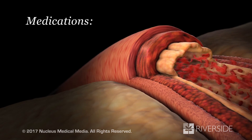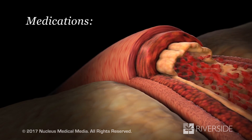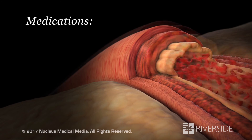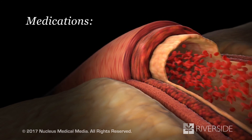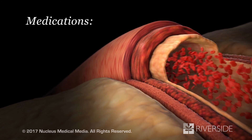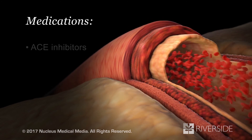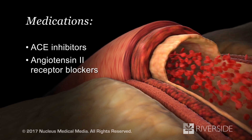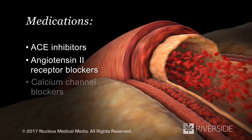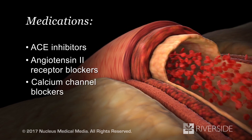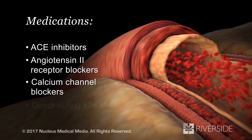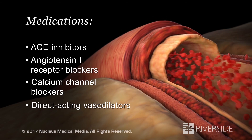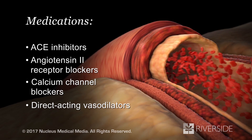Several types of drugs act directly or indirectly to reduce your blood pressure by relaxing your blood vessels, which increases their diameter. These drugs include ACE inhibitors, angiotensin II receptor blockers, calcium channel blockers, and direct-acting vasodilators.